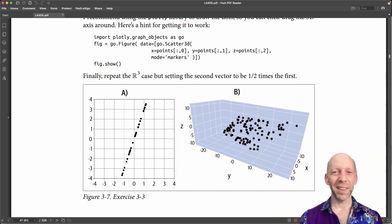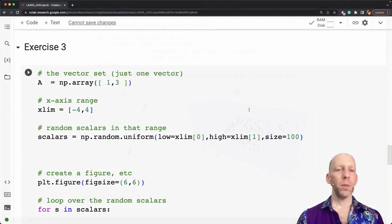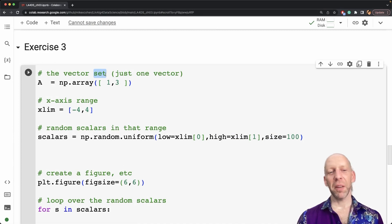Let's switch to Python and see how this looks in code. So here is our vector set. We can call it a set, it's really just one vector.